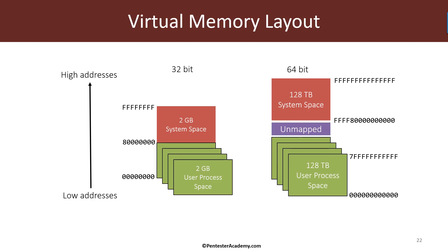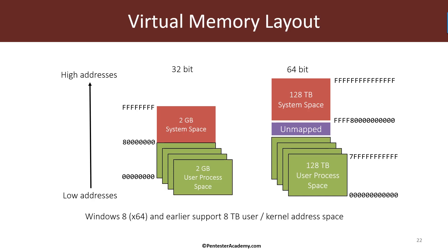By the way, the entire 64-bit address space is not used today — it is too vast, and most of it is unmapped and cannot be used due to actual processor or hardware limitations. If you are working with older versions of Windows, that is Windows 8 or Windows 7, then the address space for each process is 8 terabytes and 8 terabytes for the system. In any case, let's start looking at processes, and that will give us a sense of how to move around in kernel space.